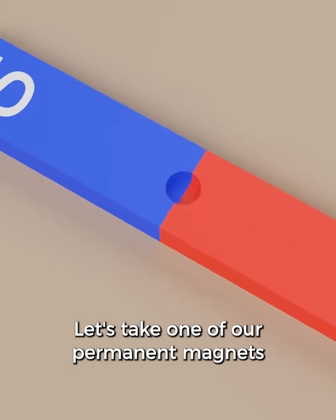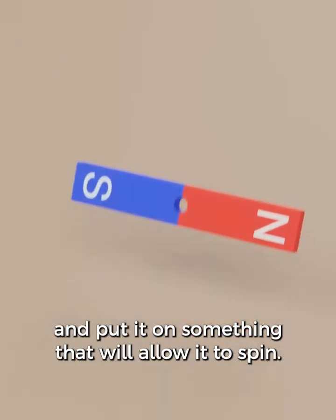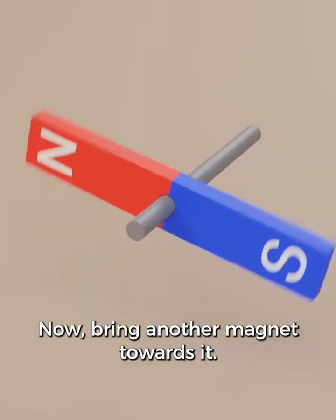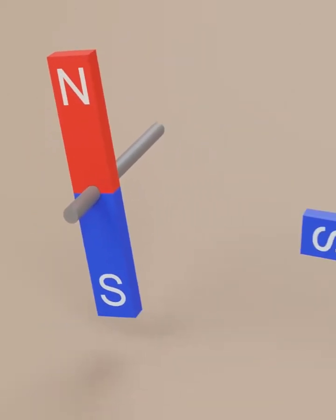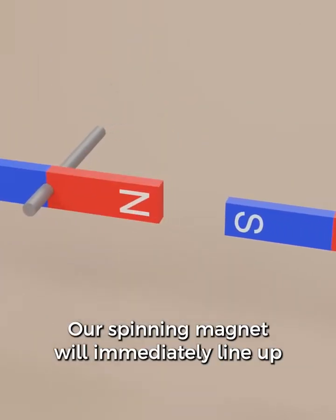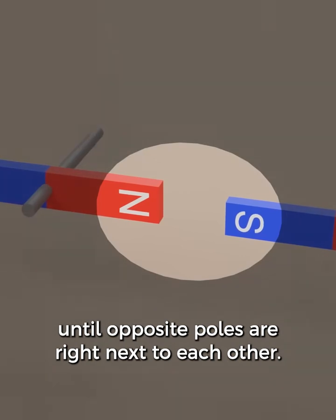Let's take one of our permanent magnets and drill a hole in the center and put it on something that will allow it to spin. Now bring another magnet towards it. Our spinning magnet will immediately line up until opposite poles are right next to each other.